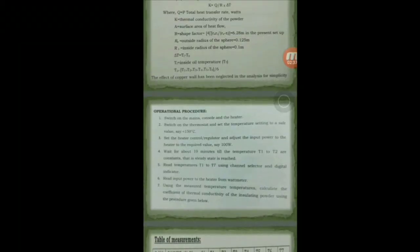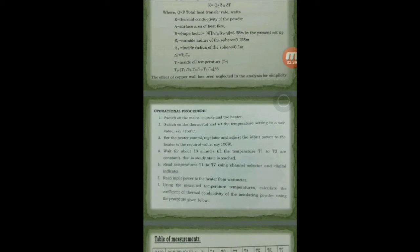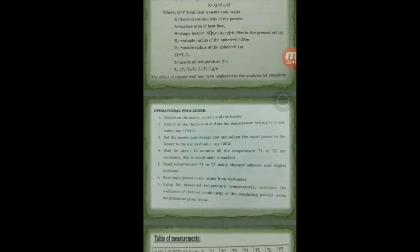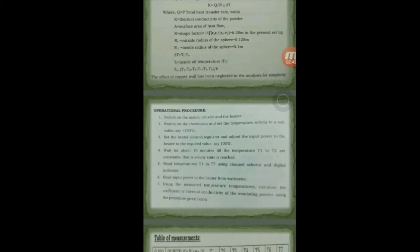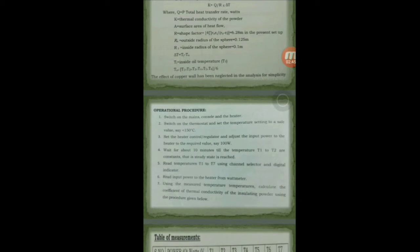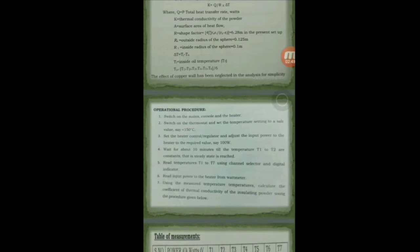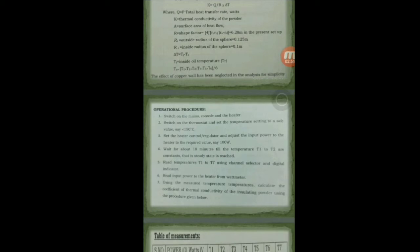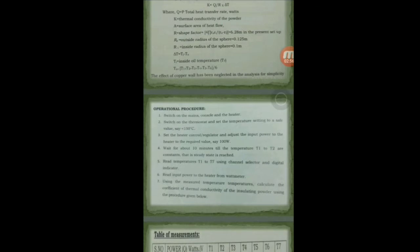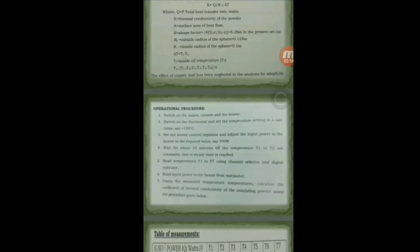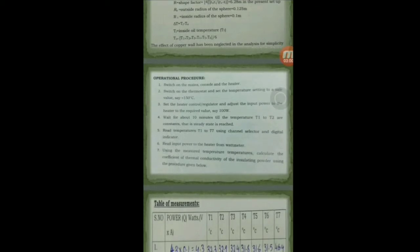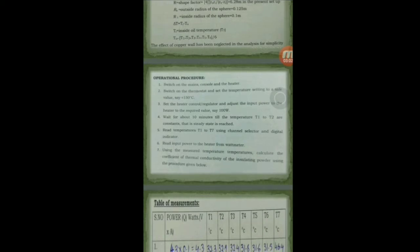The important thing to follow is to find out the temperature difference, that is Ti minus T0, which is delta T. Ti equals T7. We will be finding the temperatures from T1 to T7. Ti is T7. T0 is the summation of temperatures from T1 to T6, that is the average.